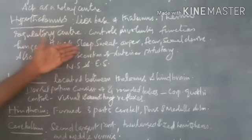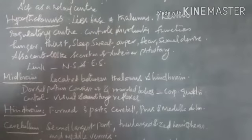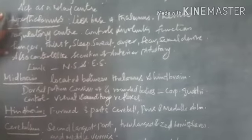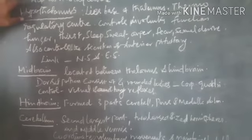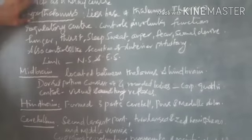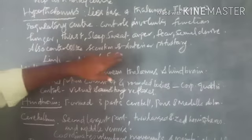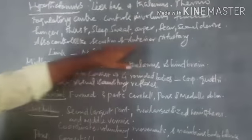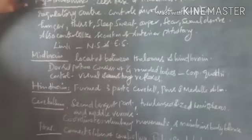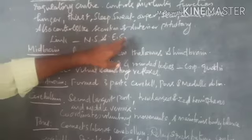The hypothalamus regulates body temperature, which is why it is called the thermoregulatory center. It also controls involuntary functions like hunger, thirst, sleep, sweat, anger, fear, and sexual desire. It controls the secretion of hormones of the anterior pituitary, making it an actual link between the nervous system and the endocrine system.